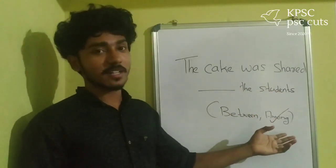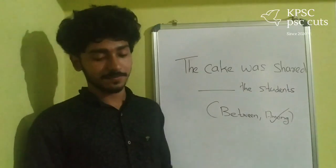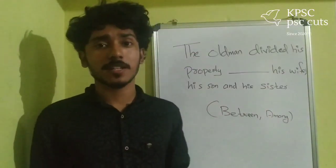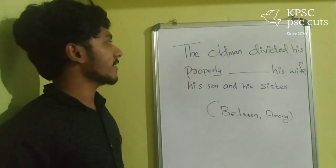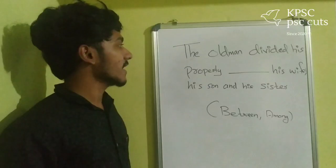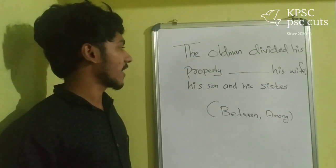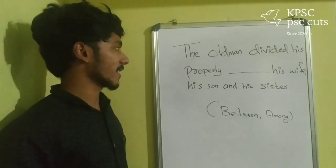Now let's go to the next question. The old man divided his property — dash — his wife, his son and his sister.